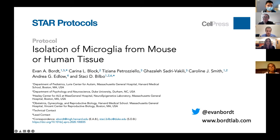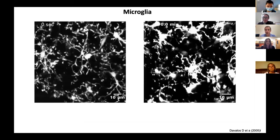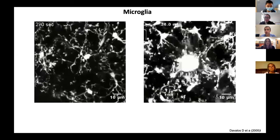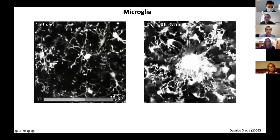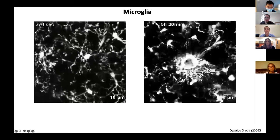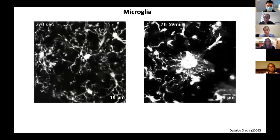My name is Evan, and I'm a new PI based at the Lurie Center for Autism at Mass General Hospital. I wanted to thank the organizers for inviting me to chat about one of the methods we use to isolate microglia. I'm sure just about everyone here knows about microglia, the innate immune cells of the central nervous system. I like to show these videos from Demetrius Davalos of in vivo two-photon imaging of microglial surveillance behaviors at baseline and in response to a laser injury.